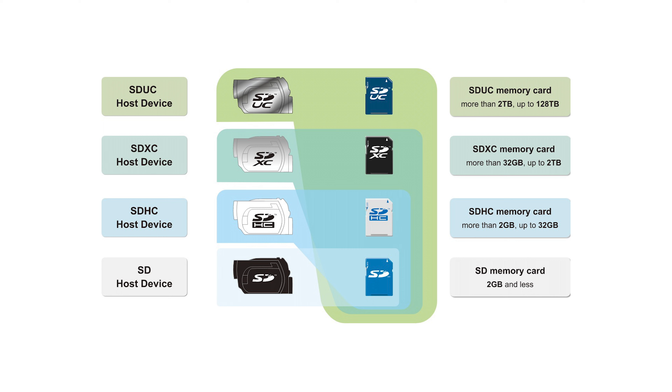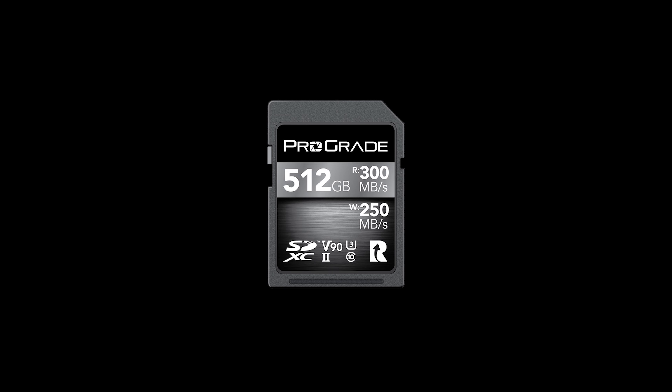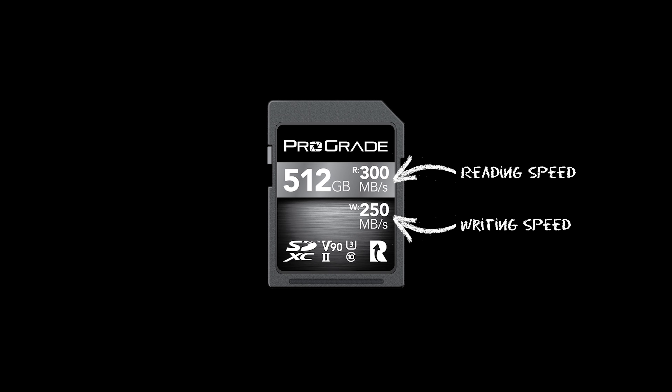Then SDHC with 32 gigabytes, SDXC with 2 terabytes, ending up with SDUC that can hold up to 128 terabytes. So it's just a standard of how much the card can save.